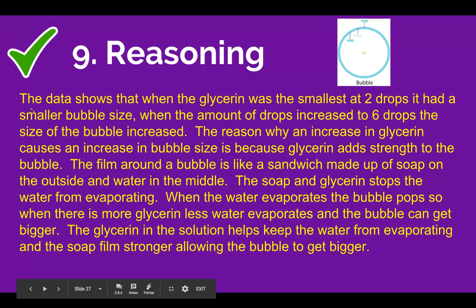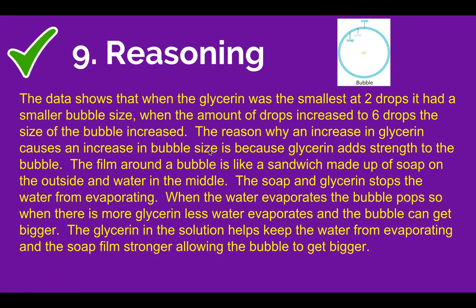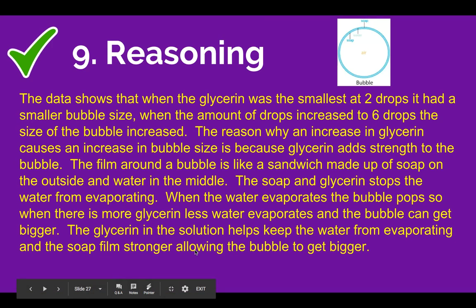Here's how I structured the reasoning. Part one — connecting evidence to claim: 'The data shows that when the glycerin was the smallest at two drops, it had a smaller bubble size. When the amount of drops increased to six drops, the size of the bubble increased.' That's only one sentence. Now here's the science: 'The reason why an increase in glycerin causes an increase in bubble size is because glycerin adds strength to the bubble. The film on the bubble is like a sandwich made up of soap on the outside and water in the middle. The soap and glycerin stop the water from evaporating. When the water evaporates, the bubble pops. So when there's more glycerin, less water evaporates and the bubble can get bigger.' Notice I didn't repeat my claim and I didn't repeat my evidence — you may want to refer to them, but that is not the core of the reasoning.